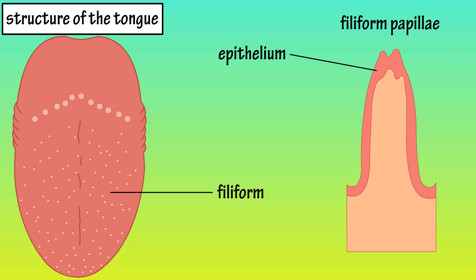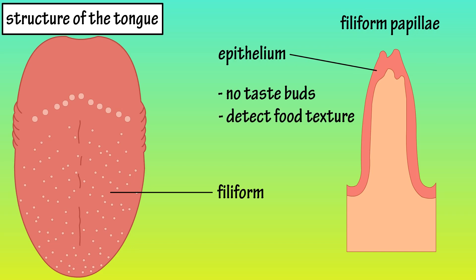Filiform papillae are short and spiked, and they are scattered among the fungiform papillae. These papillae do not house taste buds, as they help us detect food texture.